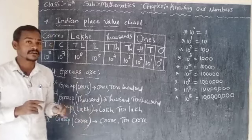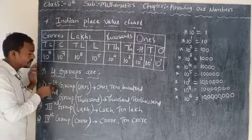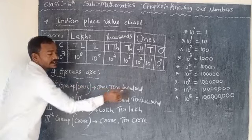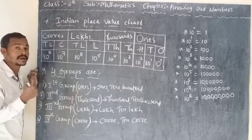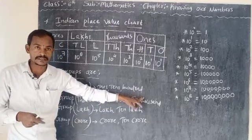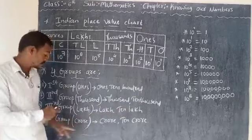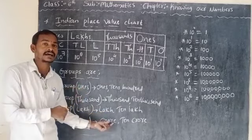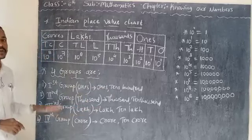The total places in the Indian place value chart are 9: ones, tens, hundred, thousand, ten thousand, lakh, 10 lakh, crore, and 10 crore. The 4 groups are: ones group, thousands group, lakh group, and crore group.